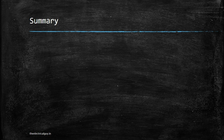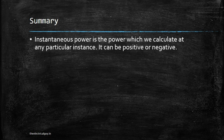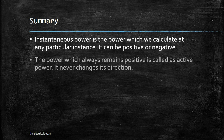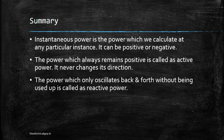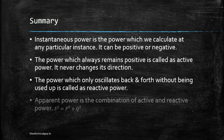Now let's summarize what we have seen. Instantaneous power is the power calculated at any particular instant — it can be positive or negative. The power which always remains positive is called active power and it never changes its direction. The power which only oscillates back and forth without being used up is called reactive power. Apparent power is the combination of active power and reactive power, given by S² = P² + Q². And power factor is the ratio of active power to apparent power. I hope this clears the concept of active, reactive and apparent power.